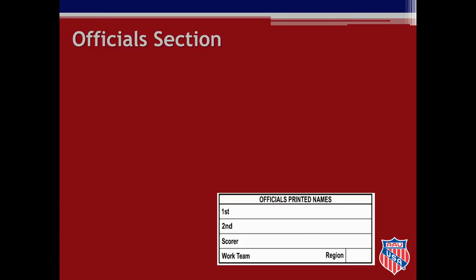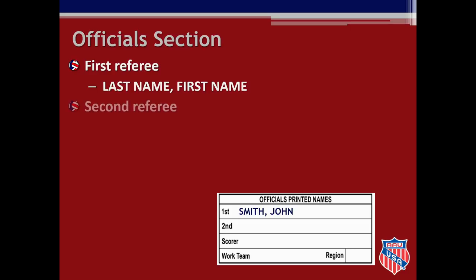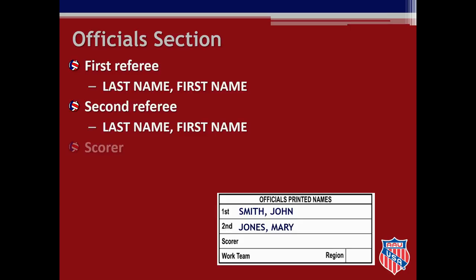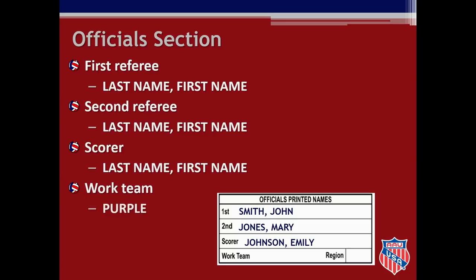Next, still using pen, you will fill in the officials' printed name section, again written in all capital letters. The first referee for the match is John Smith and the second referee is Mary Jones. You record John's name in the first referee section, writing his last name first followed by a comma and then the first name. You will use this same format for all names recorded on the sheet — last name, comma, first name. Next, fill in Mary's name in the second referee box. The scorer's name Emily Johnson is entered in the scorer's box. The work team is the name of the team providing the support crew for the match; for this match the work team is Purple from the Florida region.